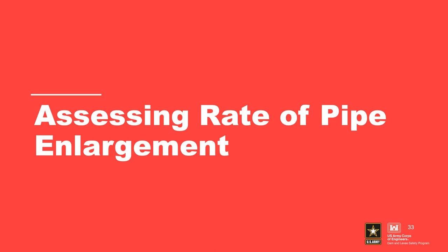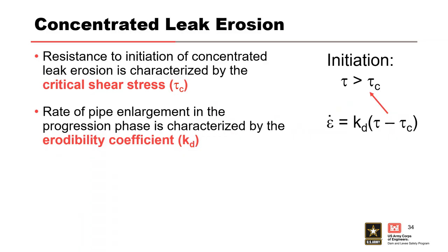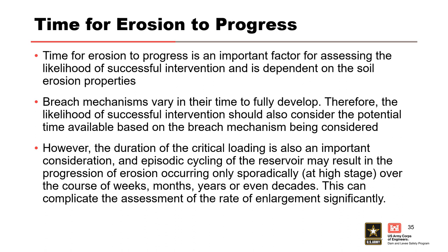Assessing the rate of pipe enlargement. The relationship between erodibility parameters and initiation and progression of concentrated leak erosion was previously provided. This excess shear stress equation can be used to assess the rate of pipe enlargement. The time for erosion to progress is an important factor for assessing the likelihood of successful intervention and is dependent on the soil erosion properties. Breach mechanisms vary in their time to fully develop; therefore, the likelihood of successful intervention should also consider the potential time available based on the breach mechanism being considered. The duration of the critical loading is also an important consideration and can complicate the assessment of the rate of enlargement significantly.